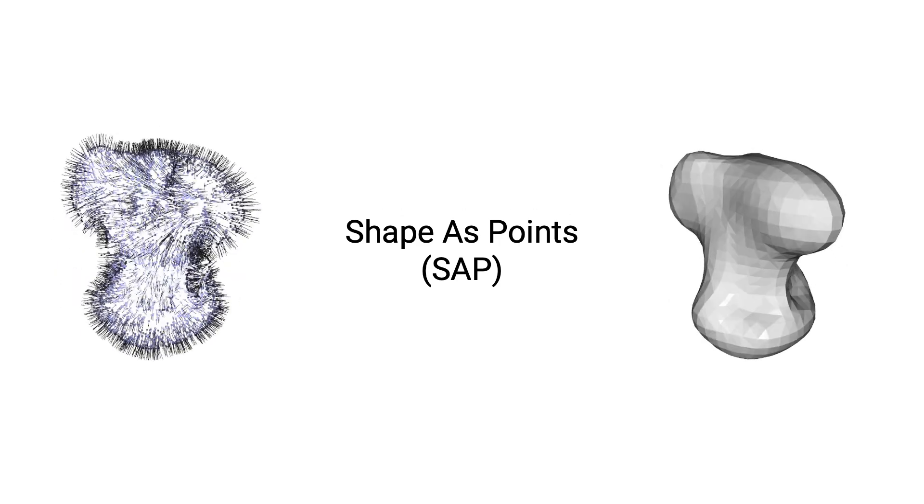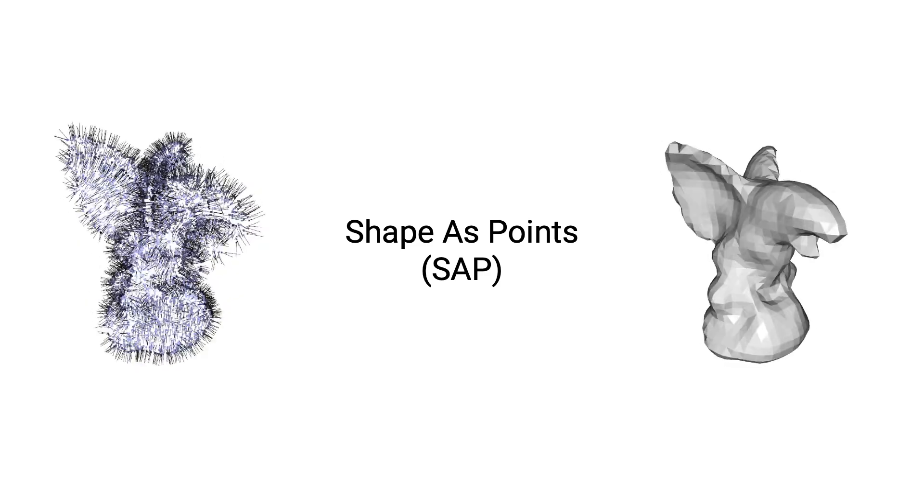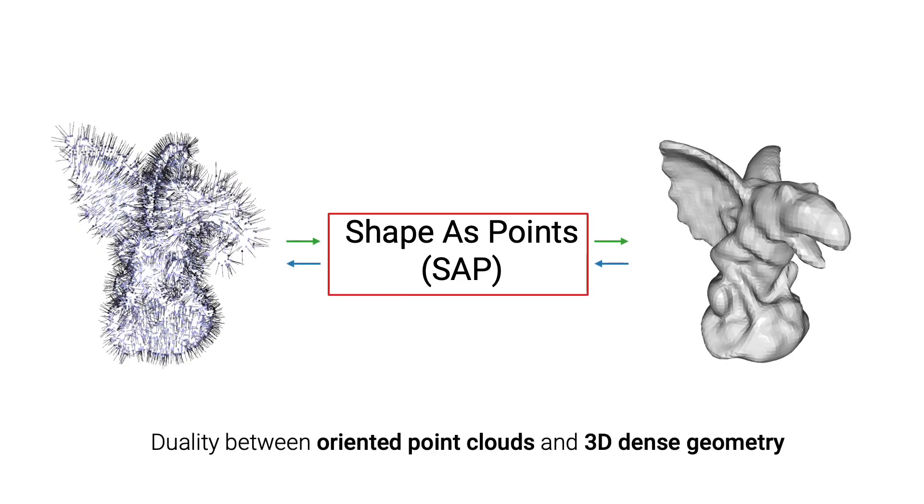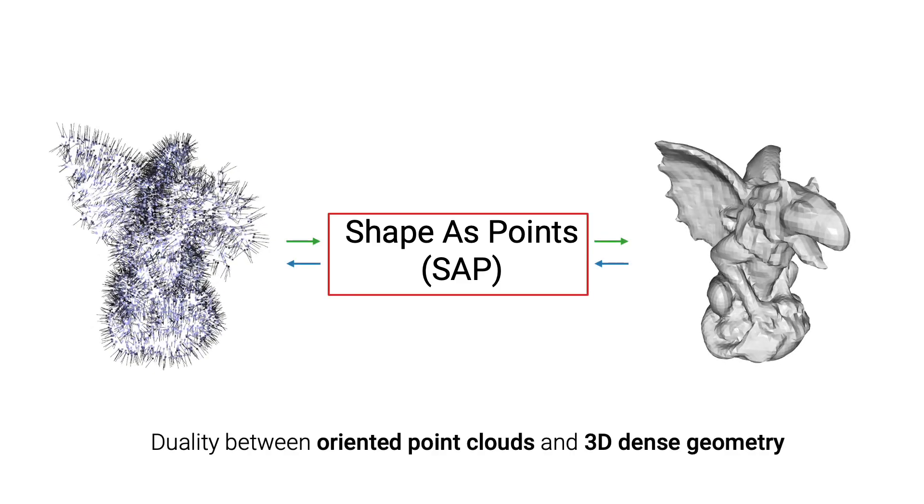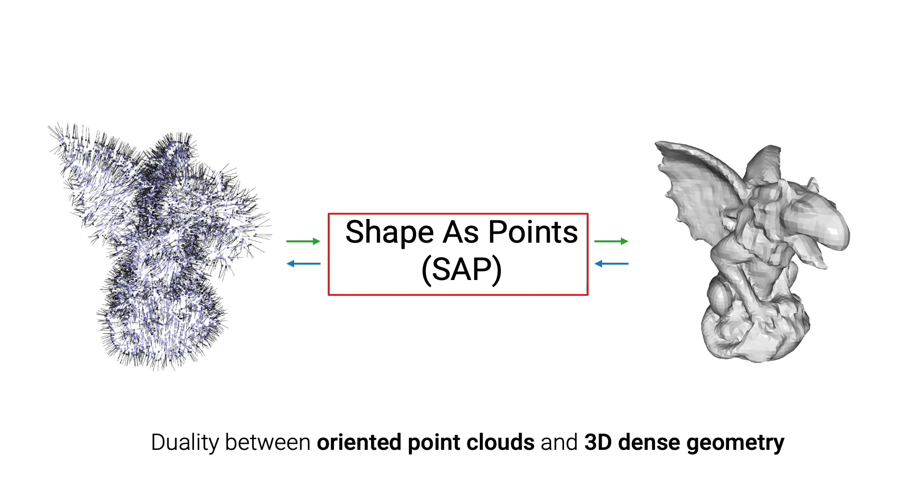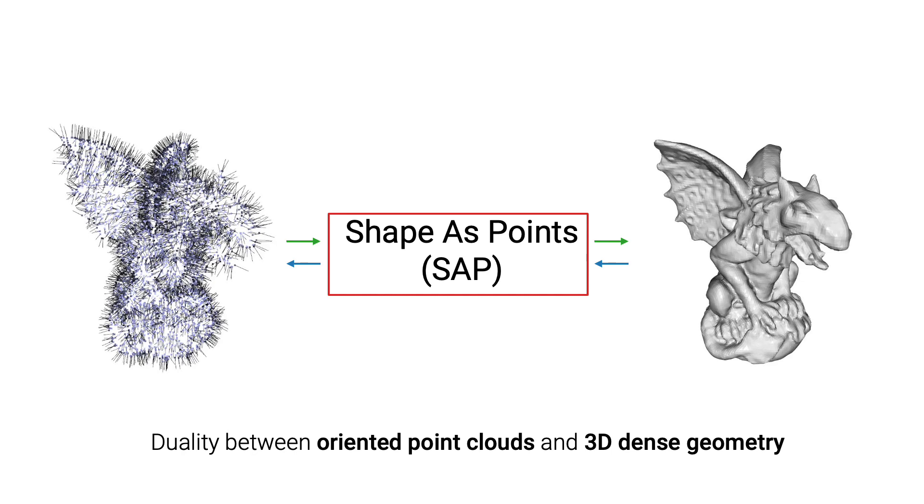The proposed method SAP is a differentiable version of the classic Poisson surface reconstruction algorithm. Moreover, SAP is also a new type of 3D shape representation. It allows us to efficiently connect the points with the mesh through an implicit indicator field.